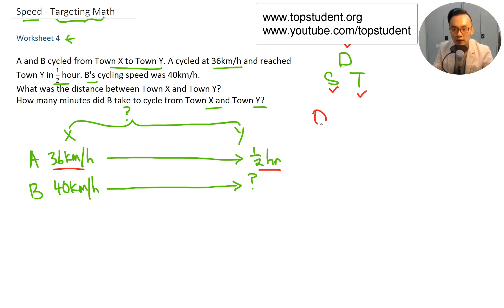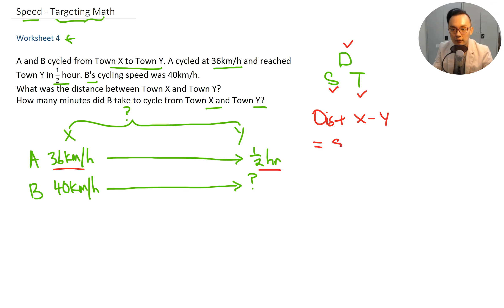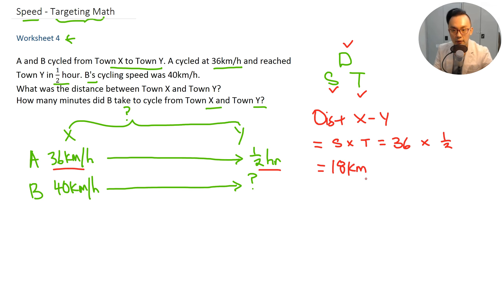Distance from X to Y equals speed times time, which is 36 kilometers per hour times half an hour, equals 18 kilometers. So the distance between town X and town Y is 18 kilometers.